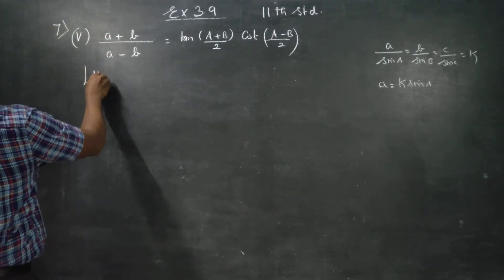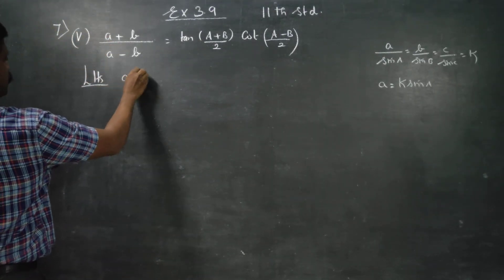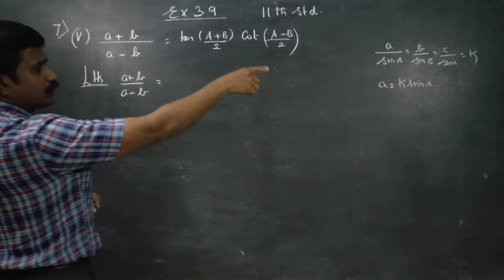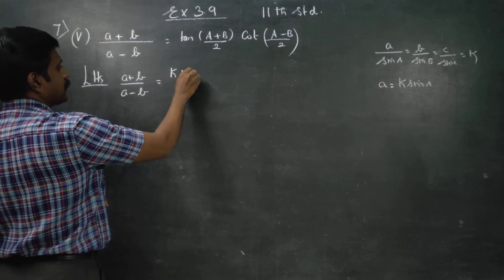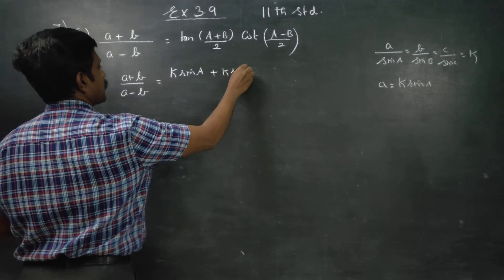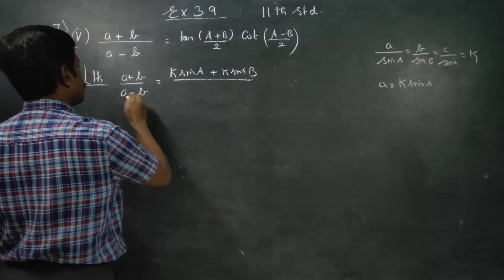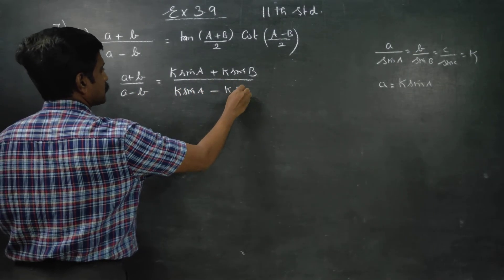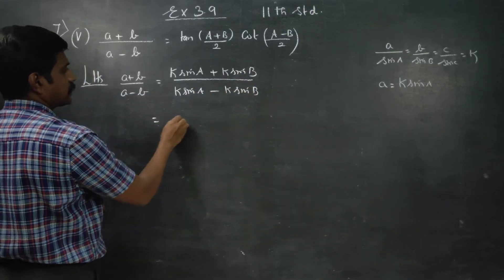I am starting with my LHS. My LHS is (a+b)/(a-b). Instead of a, I am going to use k sin A plus k sin B, all divided by k sin A minus k sin B. k is common, cancel it.